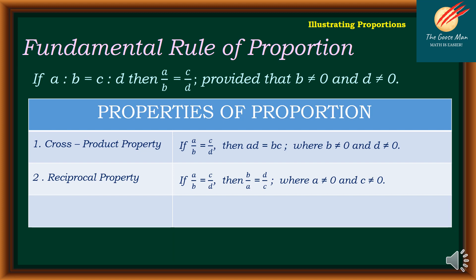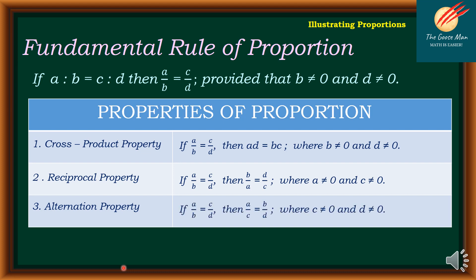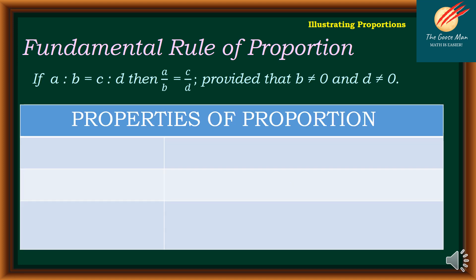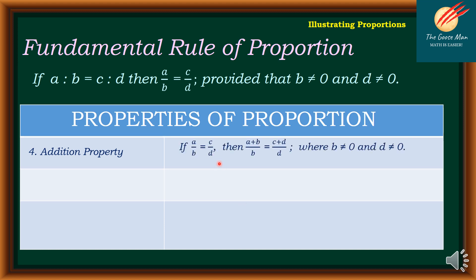It means we simply interchange the numerator and denominator for A over B as well as for C over D. The third property is the alternation property: if A over B is equal to C over D, then A over C is equal to B over D, wherein C is not equal to 0 and D is not equal to 0. The fourth property is the addition property: if A over B is equal to C over D, then A plus B all over B is equal to C plus D all over D, wherein B is not equal to 0 and D is not equal to 0.